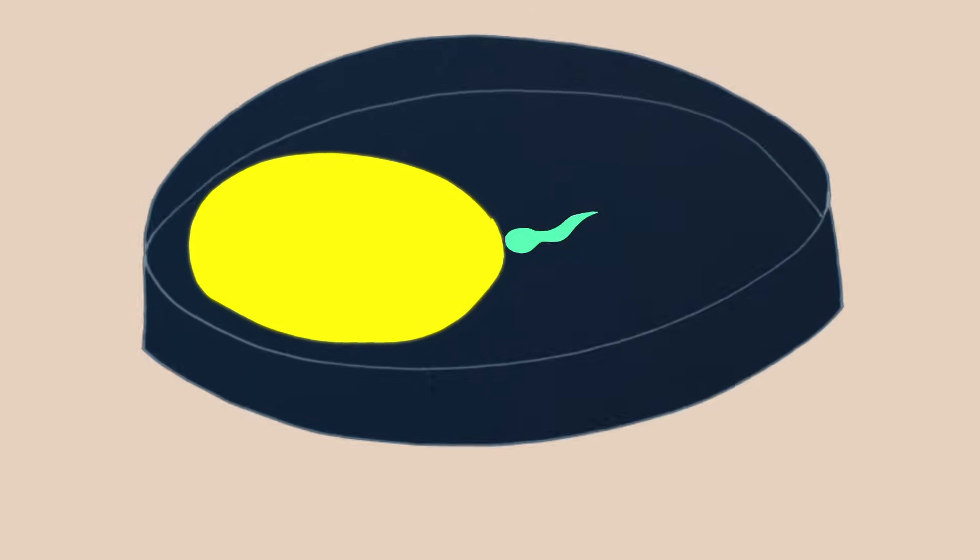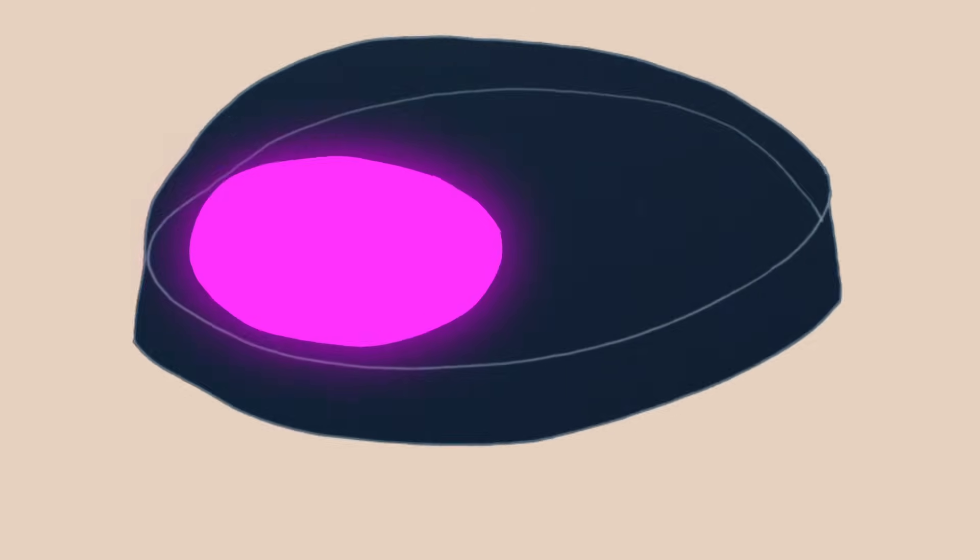Or, a doctor can actually join the sperm and egg together outside of the body, and then place the fertilized egg into the uterus. All these methods achieve the same thing. The sperm and the egg get together and unite, becoming a single cell. This is called a zygote.